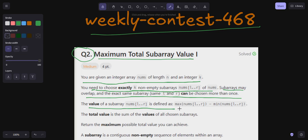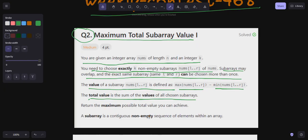is defined as max(nums[l:r]) minus min(nums[l:r]). The total value is the sum of the values of all chosen subarrays, and we have to return the maximum possible total value you can achieve. A subarray is a contiguous non-empty sequence of elements within an array.